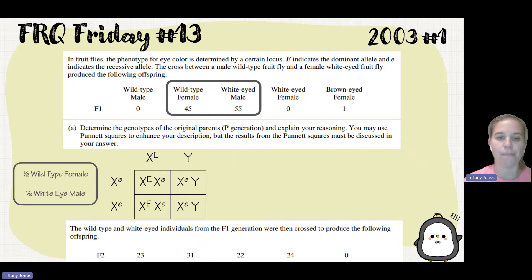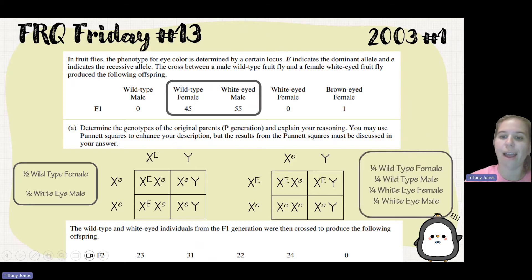So if I cross the white eyed male and my wild type female, I would end up with a one-to-one-to-one-to-one ratio, where I have one of them that is a carrier female looking wild type, one wild type male, and then I'll have one white eyed female and one white eyed male. So this matches what we saw here in our F1 cross, F2 generation.